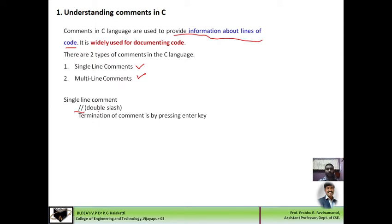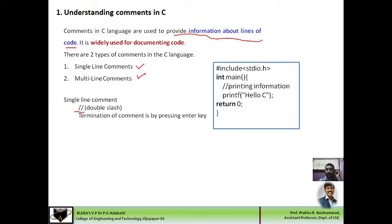The single-line comment doesn't require any ending comment symbol — if you put a double slash at the beginning of a line, that is sufficient. In this program fragment, a single-line comment symbol is inserted before a particular instruction. Hence, this particular line will not be considered by the compiler and corresponding machine code will not be generated — it is straight away ignored.